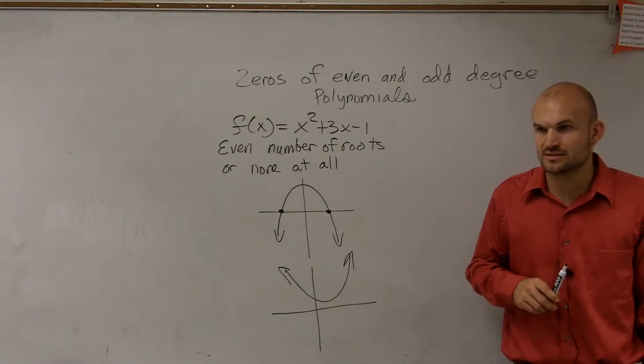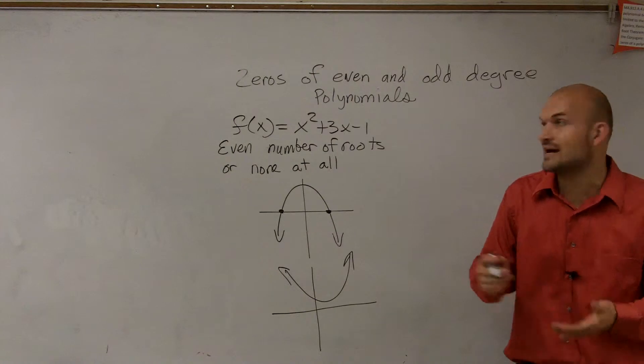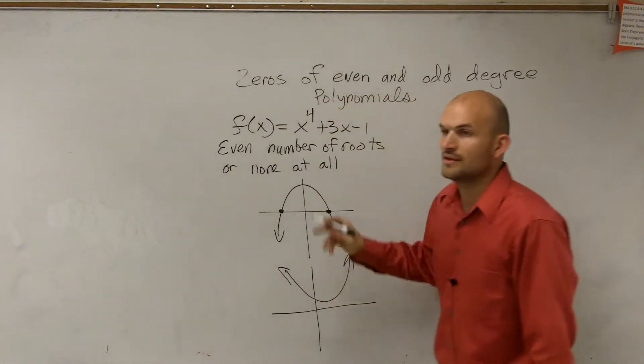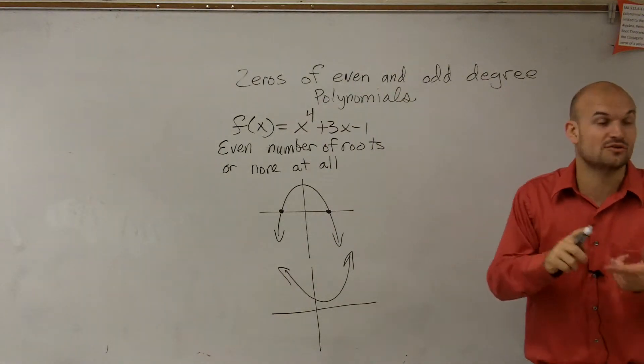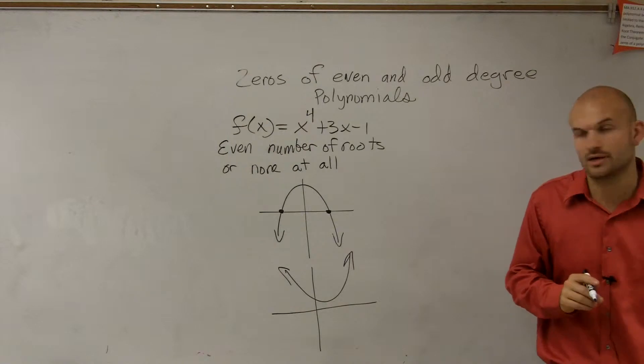OK? Does that make sense? So your only possible solutions are four, two, and zero, if it was like f of x. If I say f of x raised to the fourth, therefore, you know automatically the number of solutions is either four, two, or zero. Because it either has to be an even number, or none at all.